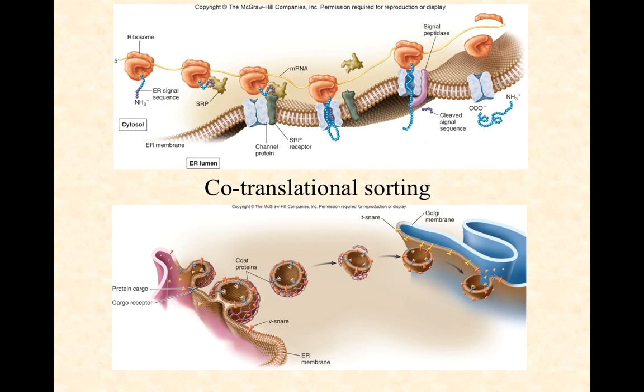When a GTP is hydrolyzed, the SRP can be released. By releasing it, translation is now resumed. And you can see in the diagram that the polypeptide continues to be produced through the channel. The signal sequence can get cleaved off. If there are further signal sequences, they will now be exposed and available to other SRPs that can make sure it gets delivered the right way.